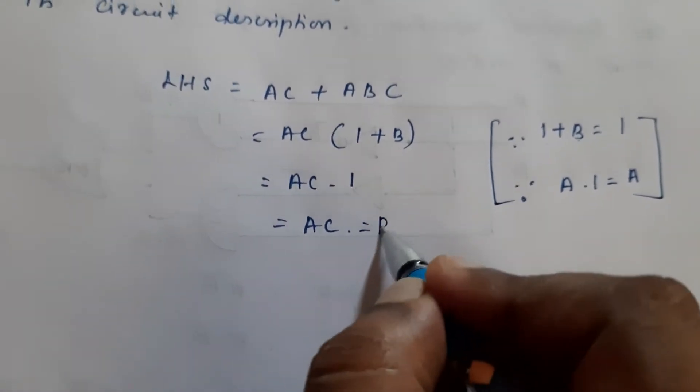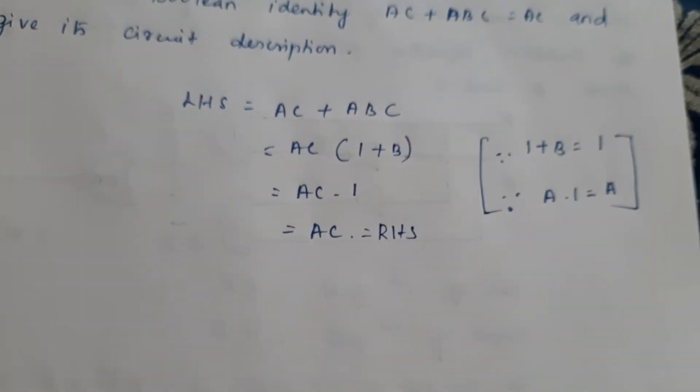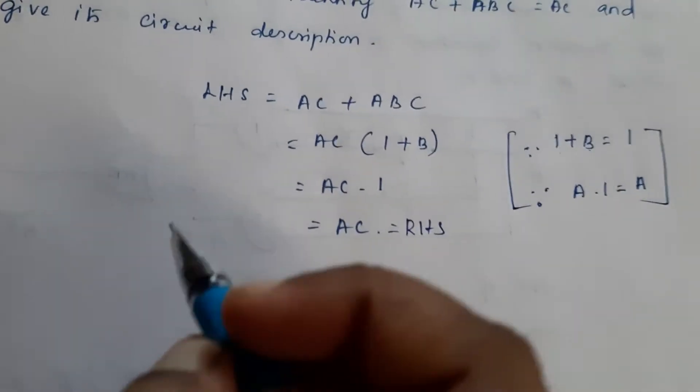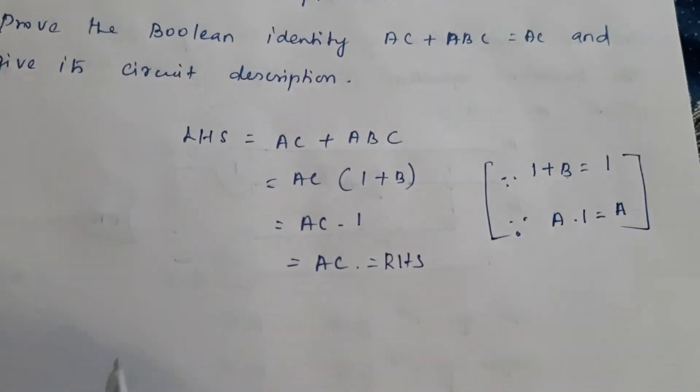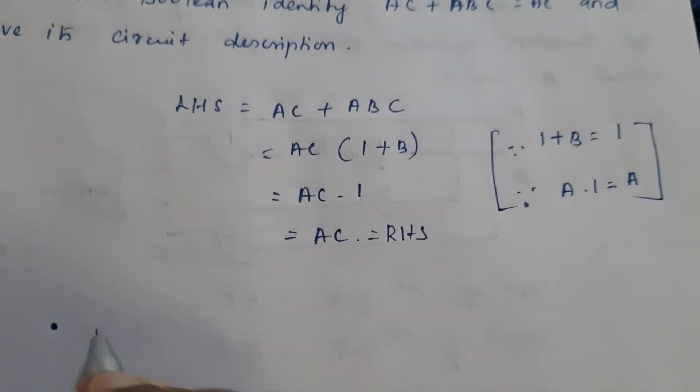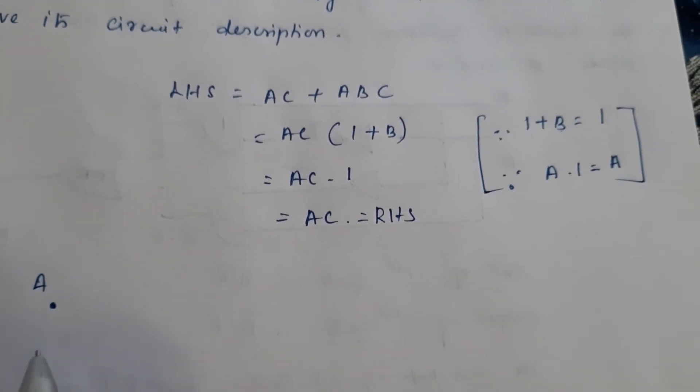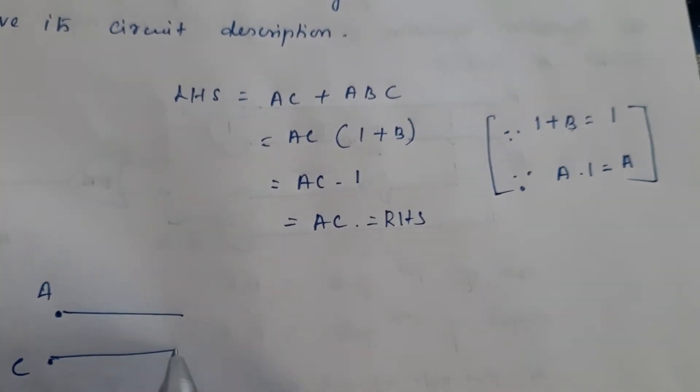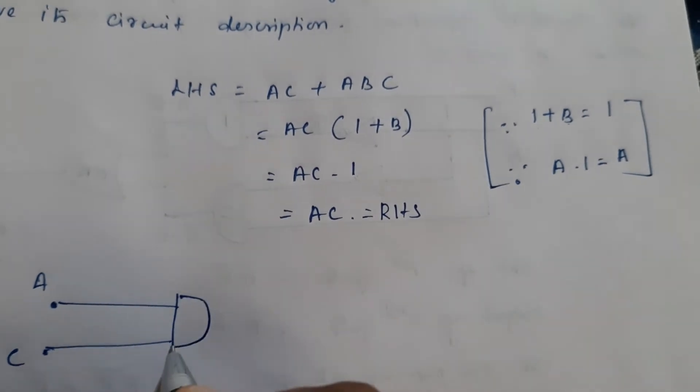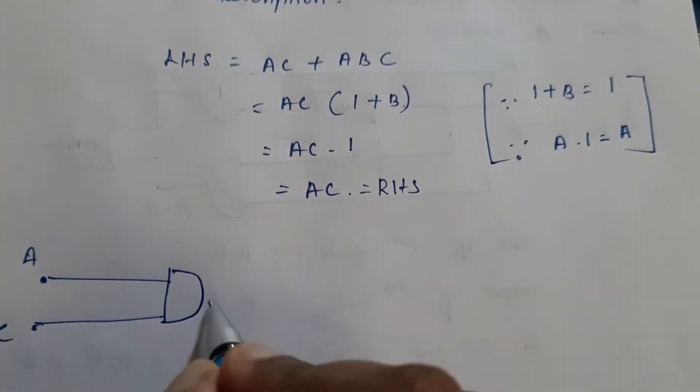So we have got the right hand side. So now we have to go for the circuit description. So first we will draw for the left hand side. So here one input is A and another input is C, AC. So A and C here what gate? It is an AND gate.